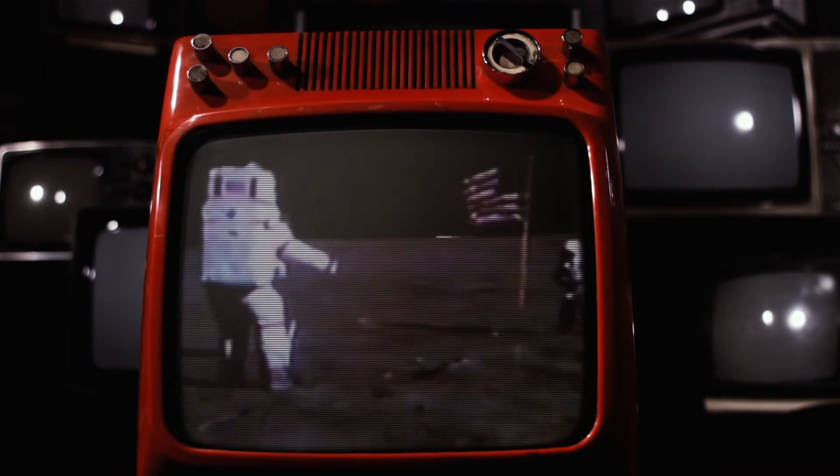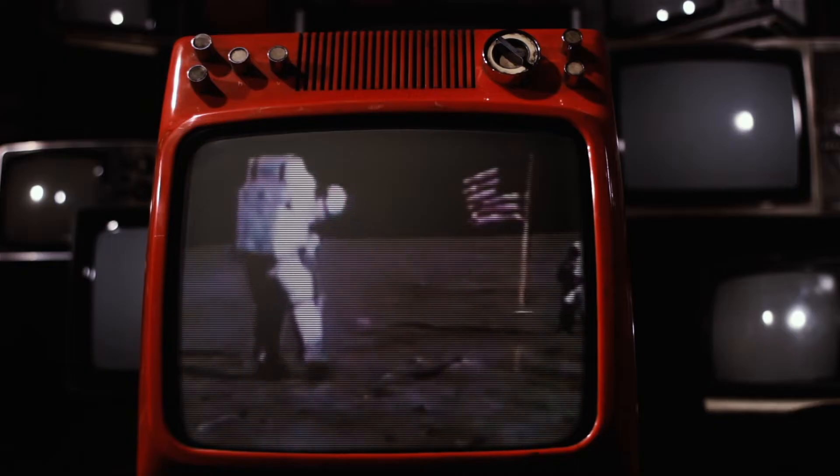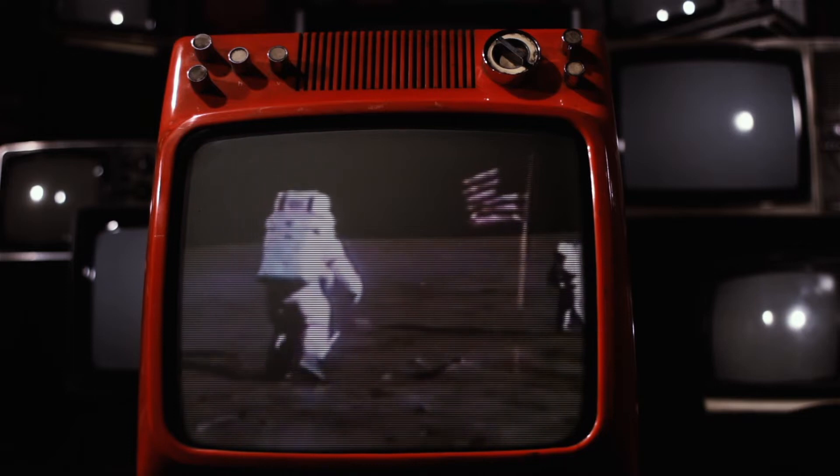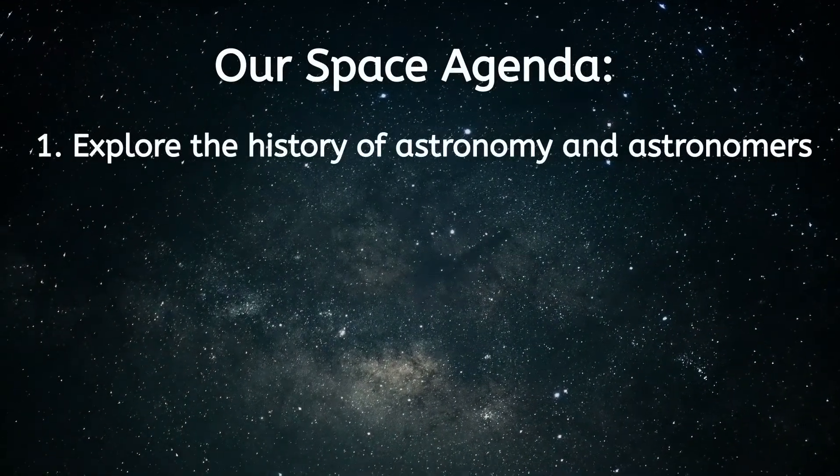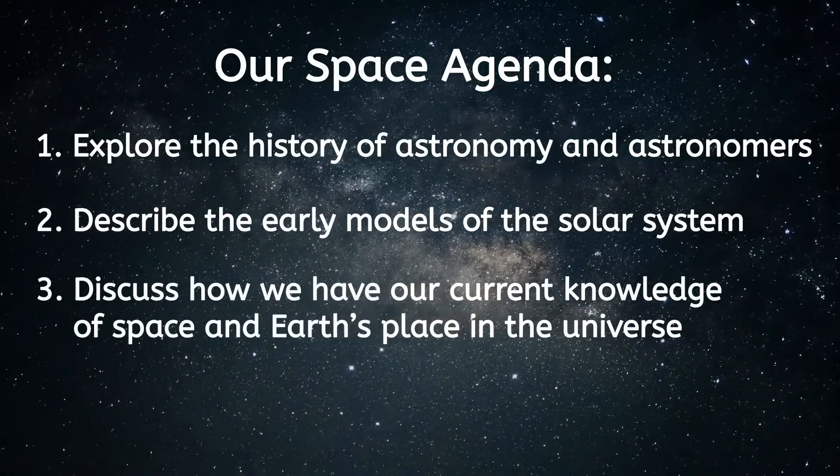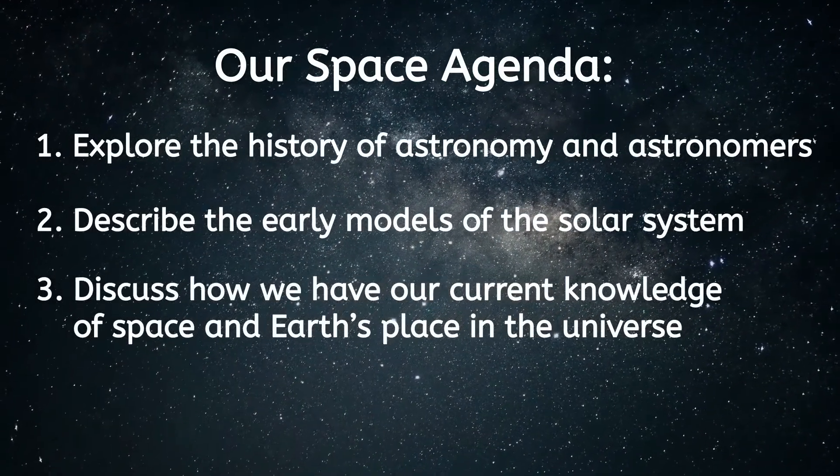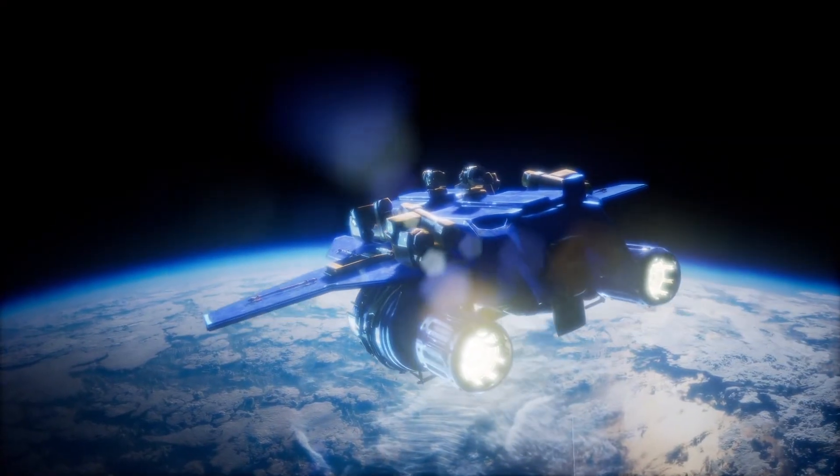Each step that scientists, mathematicians, and philosophers took throughout history to learn more about space led us to where we are today. Thanks to the hard work of astronomers, we're being led to where we will be going in the future. Today we're going to explore the history of astronomy and those who studied it, describe the early models of our solar system, and discuss how we've established our current knowledge of space and Earth's place in the universe. So let's buckle up because this spaceship is ready to go!